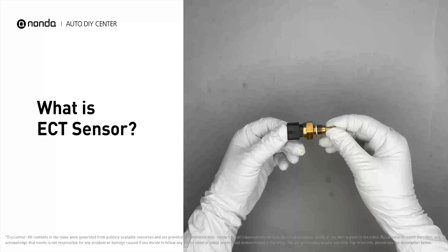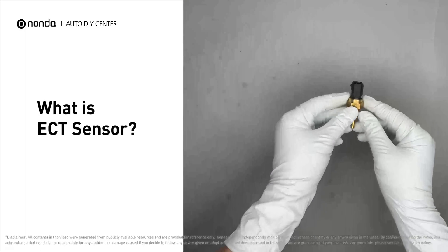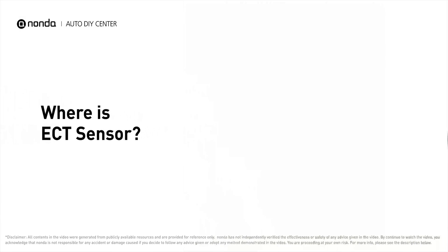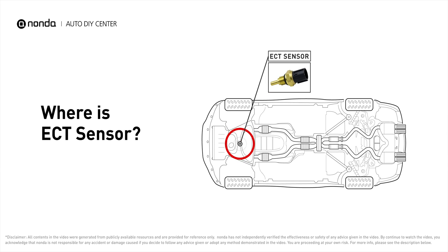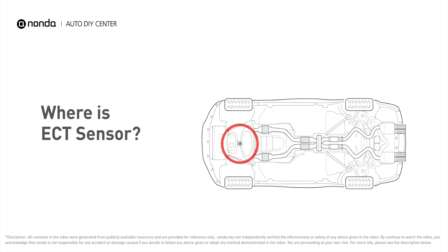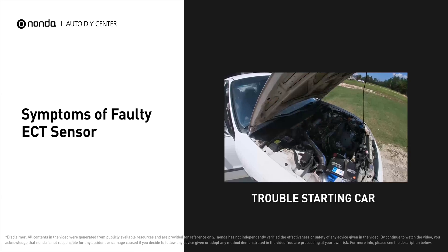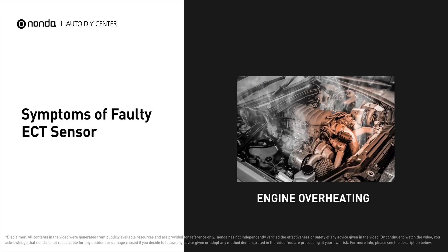The ECT sensor, or engine coolant temperature sensor, is an engine management system sensor used to monitor the temperature of the engine's coolant. The primary ECT sensor is installed near the thermostat in the cylinder head or block, or on the thermostat housing. A faulty ECT sensor can result in a rough idle, trouble starting your car, and engine overheating.